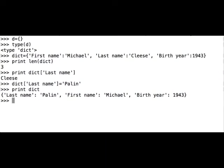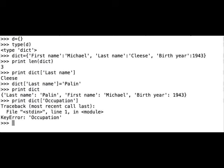Here we have the dictionary named dict, this time with the correct last name. Let's see what happens when we address a key that is not found in the dictionary. Print, dict, square brackets, string occupation. We get an error called KeyError and it says that we have a problem with the key occupation.